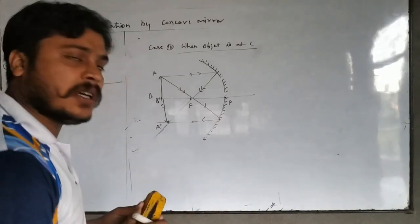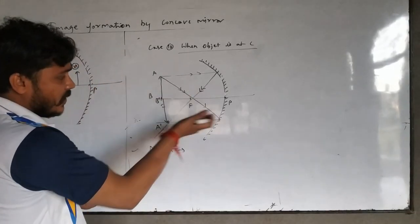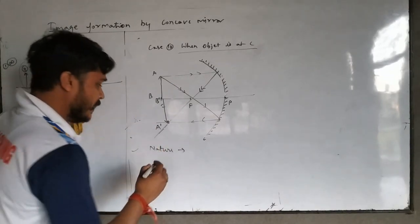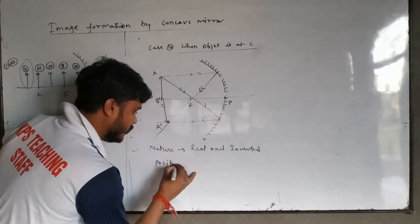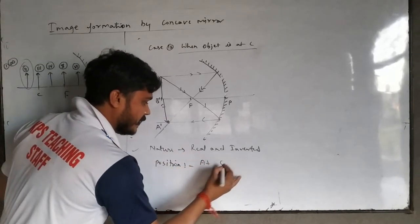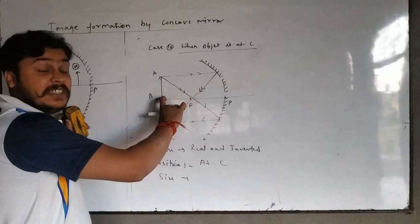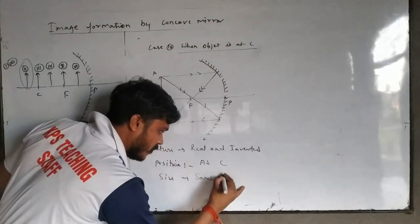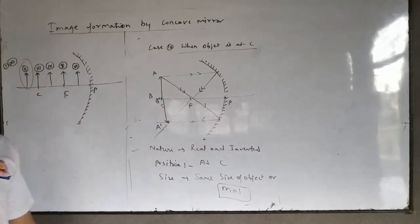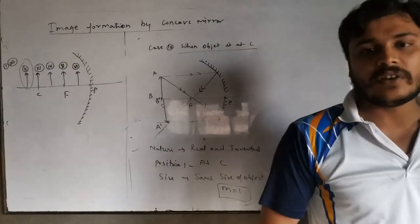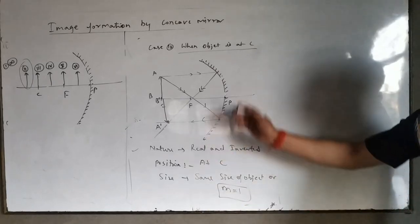Write three things. Nature: the rays actually meet with each other, so nature is real and inverted. Position: at C. Size: the object size and image size are the same — same size as the object, or magnification equals 1.